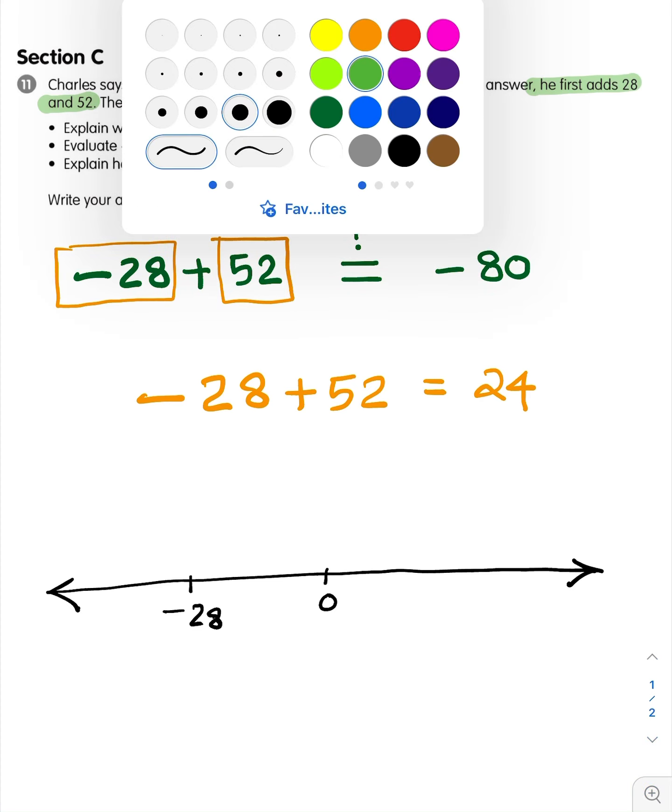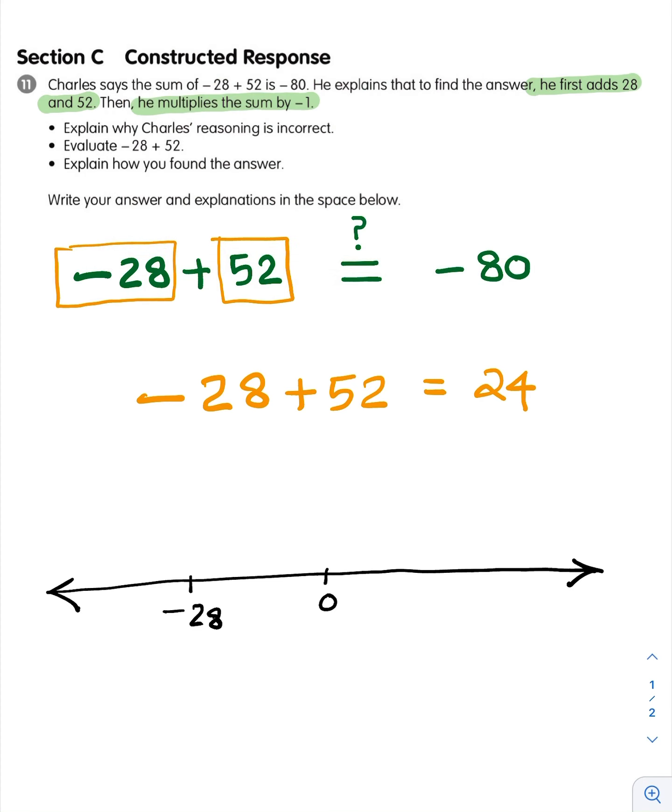And then we could say, we start at negative 28, and we add, we move 52 units to the right. And where we end up is 24, because this is 52 units from here. The length of the arrow, the length of the movement is 52 to the right. You might say, oh, Dr. K, how is that? Because you move 28 units to get from negative 28 to zero, and then 24 units to get from zero to 24. And so there are multiple ways to come up with the correct answer.